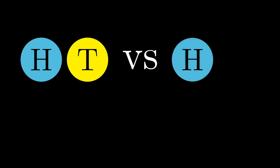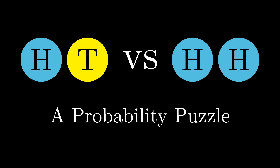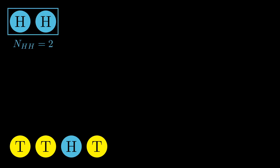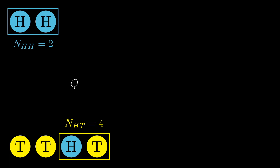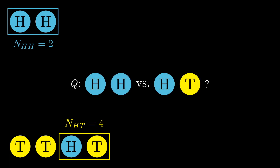Probability is full of counterintuitive puzzles like the Monty Hall problem or the two envelopes paradox. One of my absolute favorites comes from simple coin flips. Imagine flipping fair coins until you get two heads in a row, or as a separate experiment until the sequence heads-tails comes up. The question is: between heads-heads and heads-tails, which takes longer on average to appear?